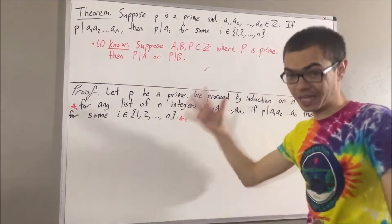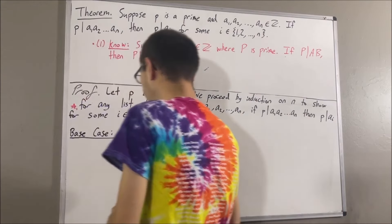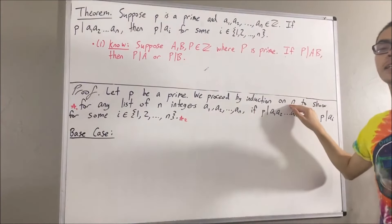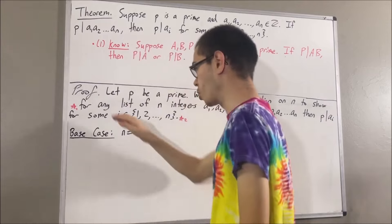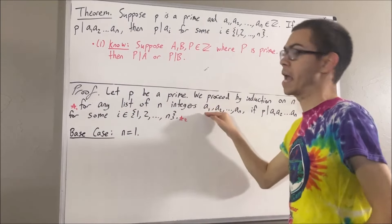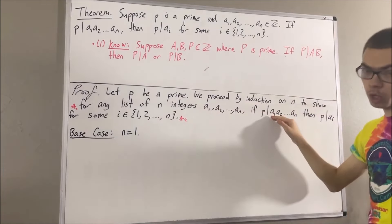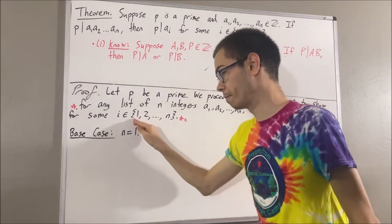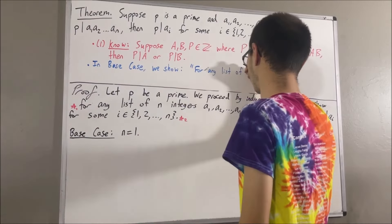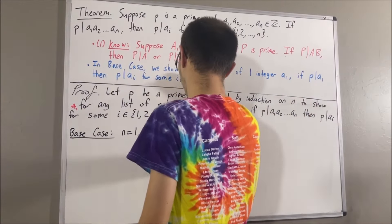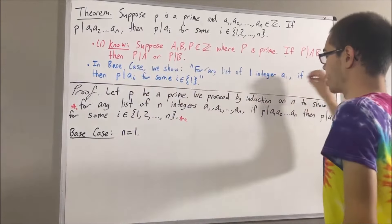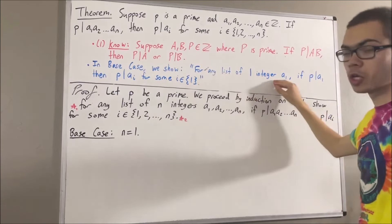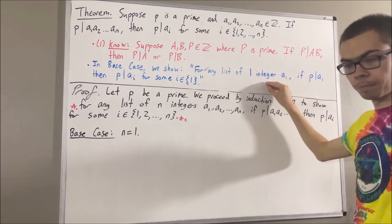Okay, so now let's start with the base case. In the base case, we're trying to prove that star 1 to star 2 is true in the case where n is equal to 1. Which means we want to show for any list of one integer, a1, if p is a divisor of a1, then p is a divisor of ai for some integer i between 1 and 1. And since we're trying to prove a statement about any list of one integer, let's give ourselves an arbitrary list of one integer. We'll call it a1.